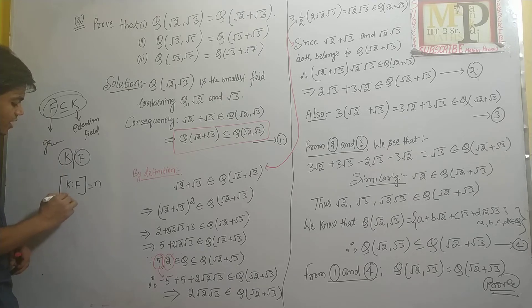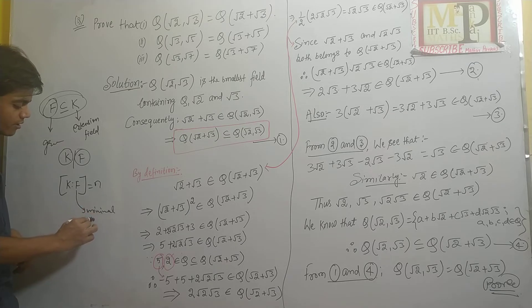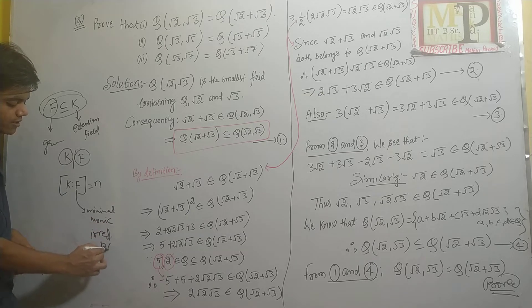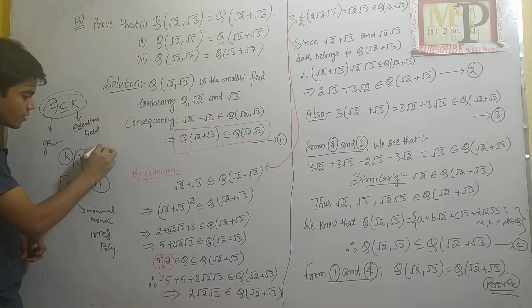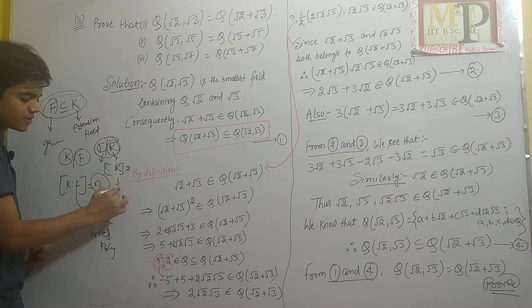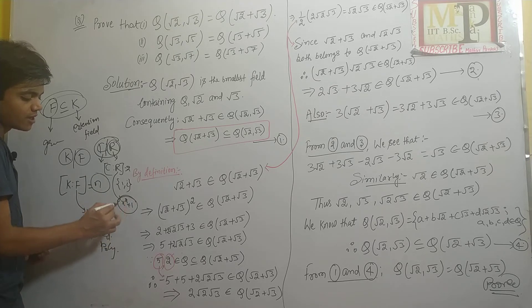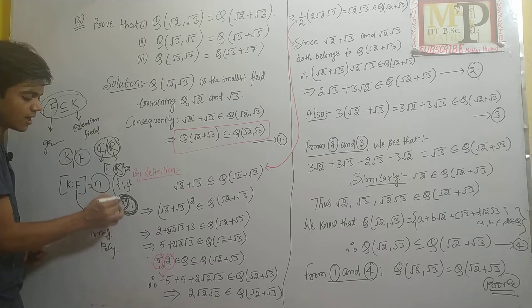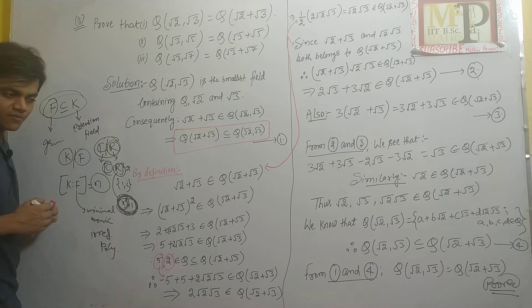We have also discussed that if F has a minimal polynomial which is an irreducible polynomial, its degree will be n. We took a small example: C over R — if this is our C field extension of real numbers, then the dimension of C over R has basis {1, i}. All this we have discussed in the previous lecture.